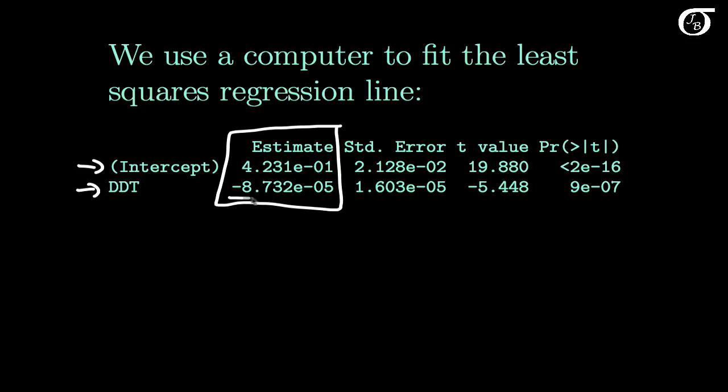And so our estimated slope in our least squares regression line is minus 8.732 times 10 to the negative 5. And if you're unfamiliar with scientific notation, this simply means move the decimal places over 5 places. And so this is minus 0.00008732.